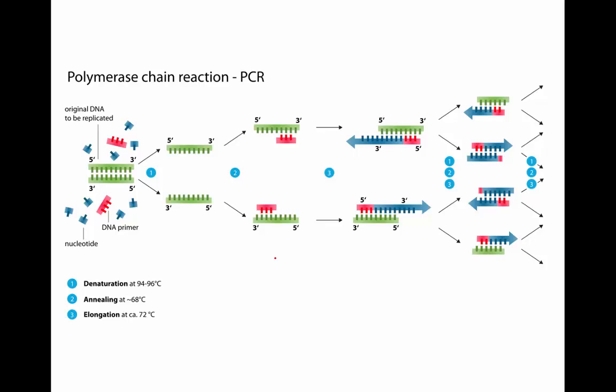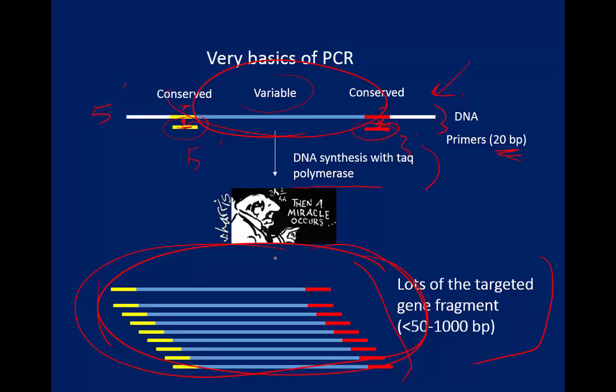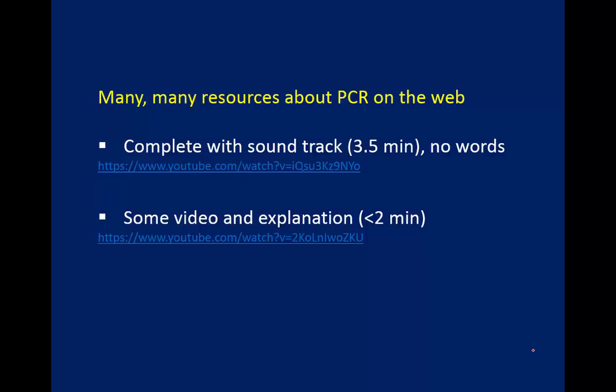Here's a more complicated version of PCR that I found on the web. As a biologist you should know this, though I'm not going to ask you to reproduce it in detail. What you should know is that you need primers and DNA polymerase, and the end result is lots of copies of the targeted gene fragment. There are also many diagrams and videos online that explain PCR — some with good visual explanations, some drier — so if this doesn't work for you, you can find other resources on Google.